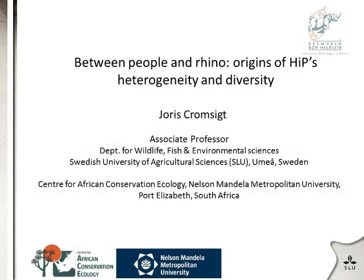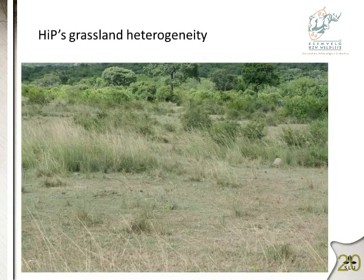We'll talk about people and rhino. I'm trying to cover two different chapters from the book. One chapter is about the history of HiP going as far back as possible in terms of human land use. The other chapter is about grassland heterogeneity and drivers of grassland heterogeneity. So there will not be a lot of detail in this talk, but there's a lot more detail in the chapters.